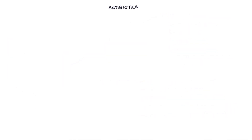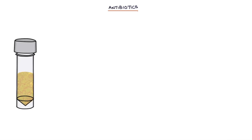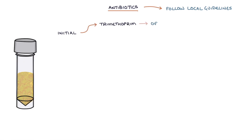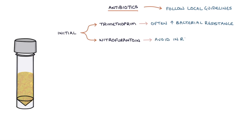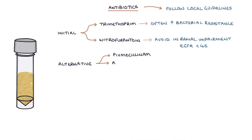Always follow local guidelines. An appropriate initial antibiotic in the community would be Trimethoprim, however this is often associated with high rates of bacterial resistance; and Nitrofurantoin, which needs to be avoided in patients with renal impairment and an eGFR of less than 45. Alternative choices are Pivmecillinam, Amoxicillin, and Cefalexin.